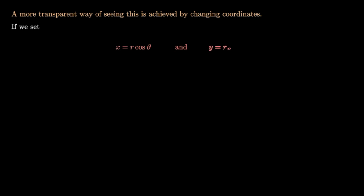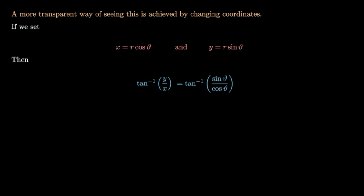A more transparent way of seeing this is by changing to polar coordinates. Setting x = r·cos(θ) and y = r·sin(θ), arctan(y/x) becomes arctan(r·sin(θ)/r·cos(θ)). The r's cancel, giving arctan(sin(θ)/cos(θ)) = arctan(tan(θ)) = θ. So f being given by grad(arctan(y/x)) implies that f equals the gradient of the angle function θ.